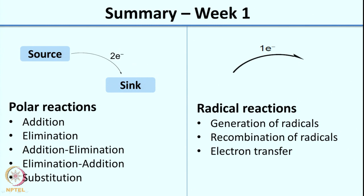For polar reactions, you use a double-headed arrow to show movement of electrons, and this double-headed arrow indicates movement of 2 electrons. Typically the arrow originates from the electron source and goes to the electron sink. Terms analogous to source include donor and nucleophile, while terms for sink include electrophile and acceptor.